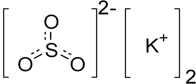Potassium sulfite, K2SO3, is a chemical compound which is the salt of potassium cation and sulfide anion. As a food additive it is used as a preservative under the E number E-225, INS number 225. It is approved for use in Australia and New Zealand and is not approved in the EU or US.